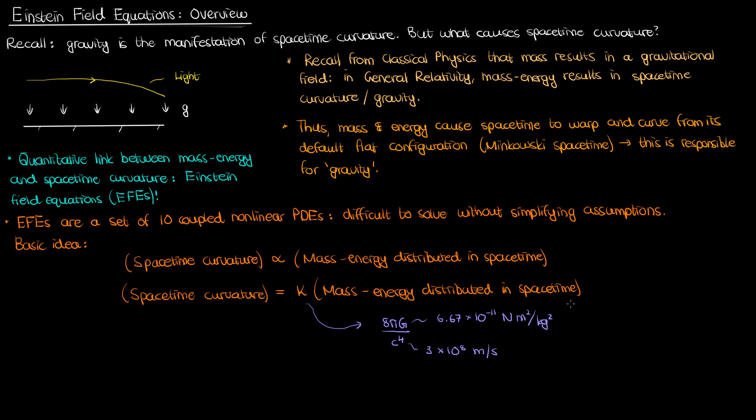Now what about these two terms in the equation, the spacetime curvature and the mass-energy distribution? Well, the mass-energy distribution is typically written with a tensor T, whose components are denoted by T sub mu nu. This is also known as the stress-energy tensor, or the stress-energy momentum tensor. Meanwhile, the term on the left-hand side is written in terms of the Ricci tensor R, minus half the Ricci scalar R, times the metric tensor G, plus capital lambda times the metric tensor G again.